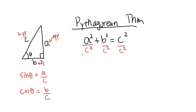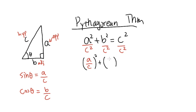For the first part we have a squared over c squared. Because both have the second power, we can write a squared over c squared as (a/c) squared. Likewise for the second part, b squared over c squared becomes (b/c) squared. At the end, c squared over c squared of course cancels out to just 1.